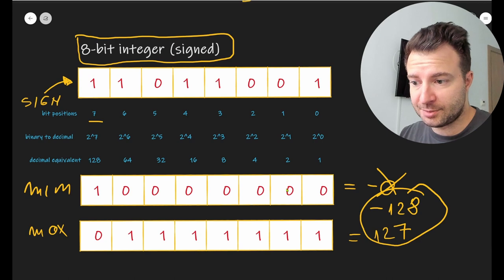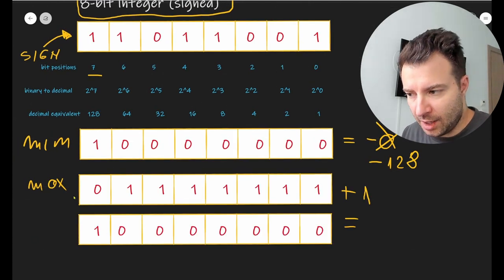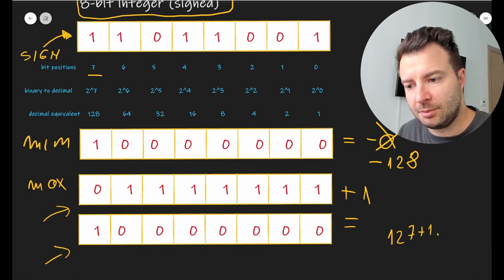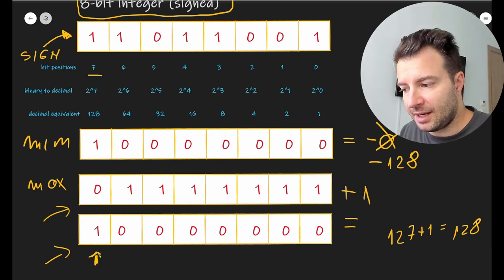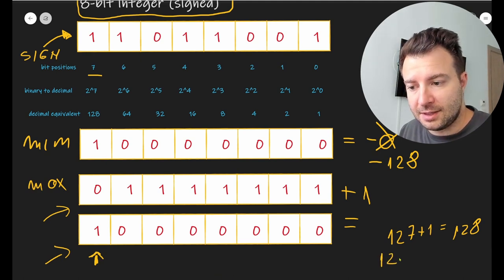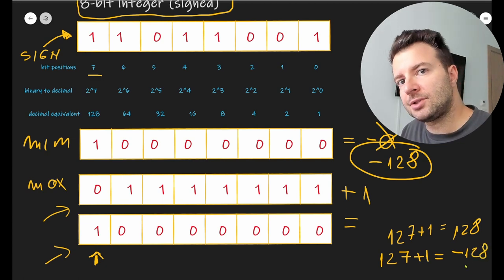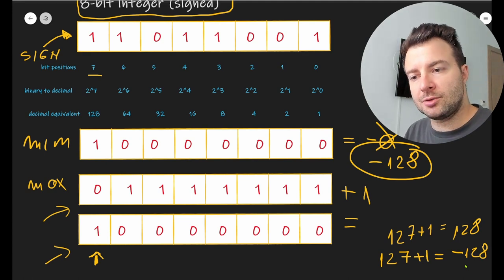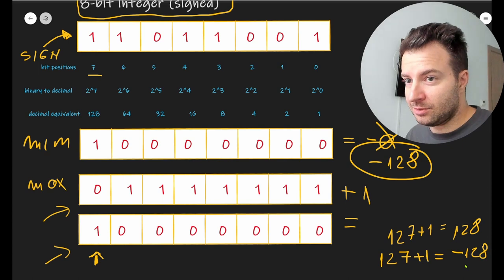What happens if we add one to the signed maximum value of 127? Adding one to this number results in a carry that sets the sign bit. Normally with unsigned numbers, 127 + 1 = 128, but with signed numbers that extra bit on the first position becomes the sign of the result, which means 127 + 1 ends up being minus 128. So just like with unsigned integers, adding one to the maximum value jumps the number to its minimum value.